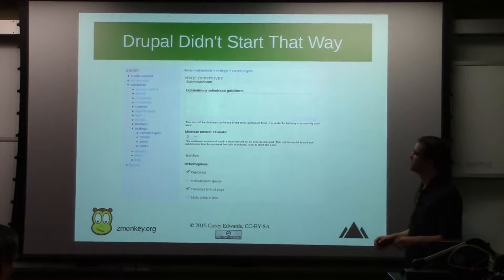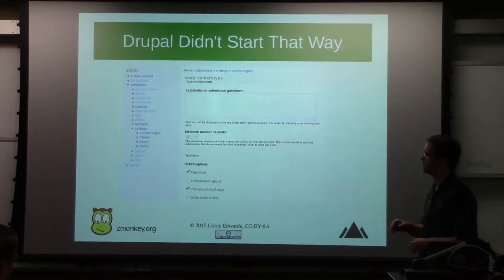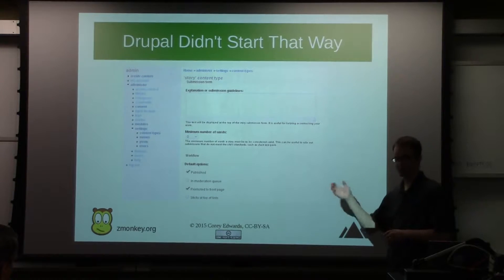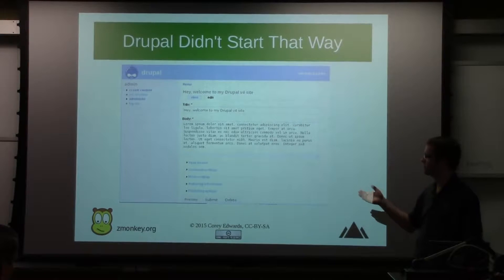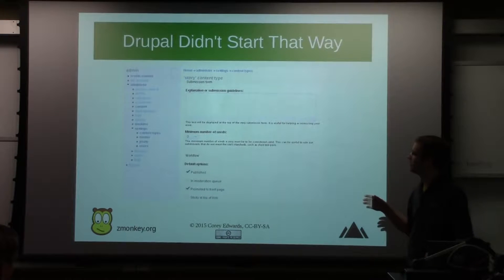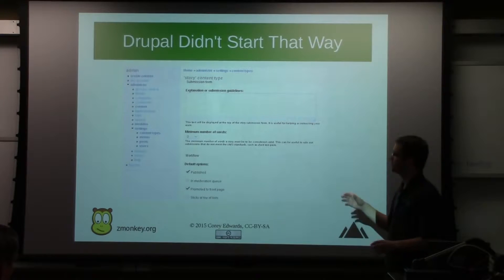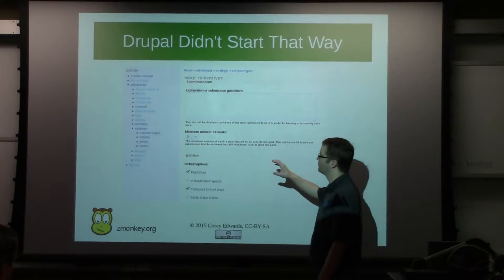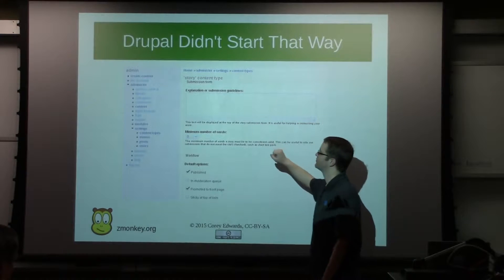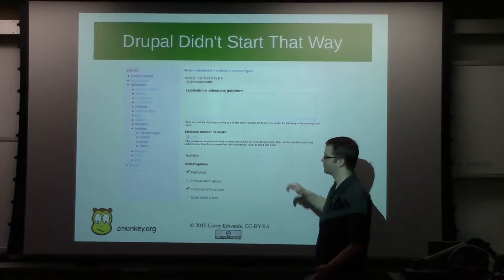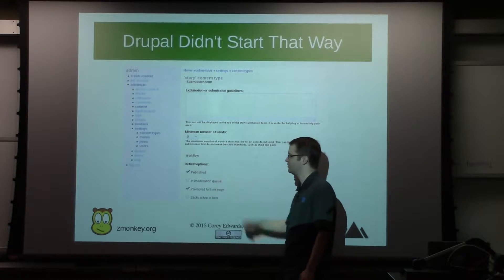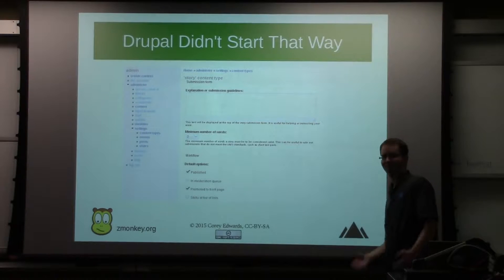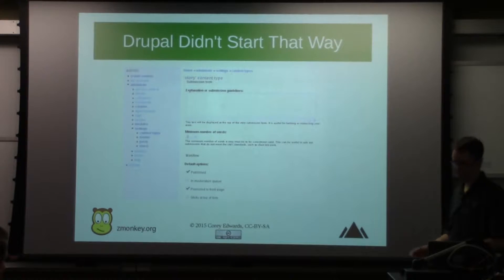When you're editing the story - they call it a story - there was also a static page which didn't have comments. You could go in and edit this story type, but really all you could do is give an explanation of what the story was, the minimum number of words, whether it should be published, and whether it should go to moderation. That was kind of it. Not a lot of flexibility there.